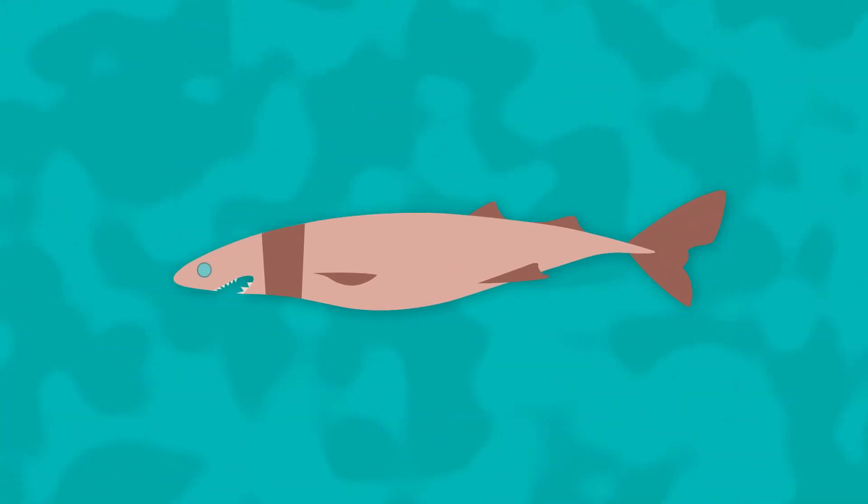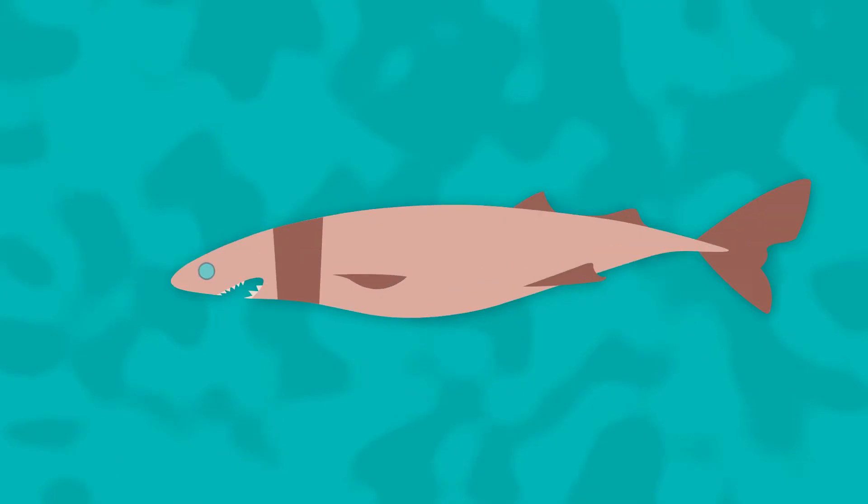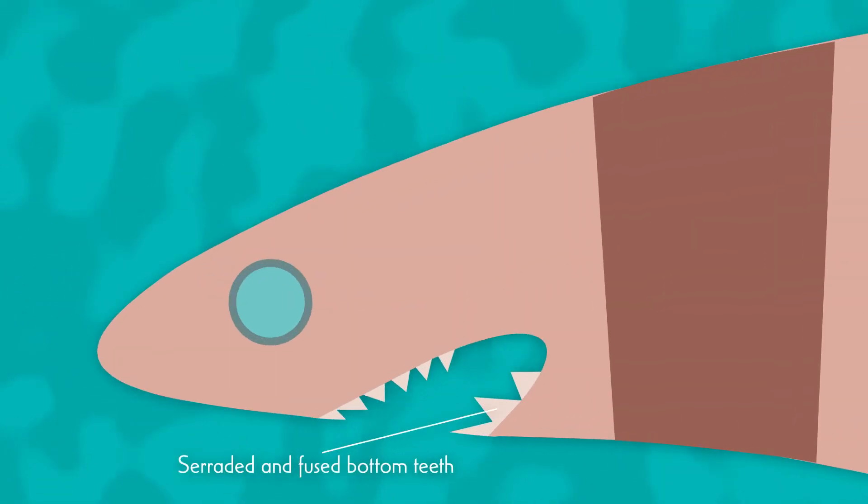Some of the unique features that these sharks have include their bioluminescent undersides and their serrated and fused bottom row of teeth.